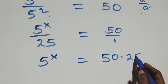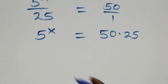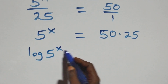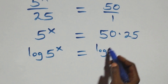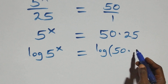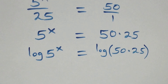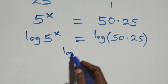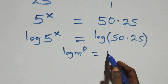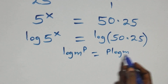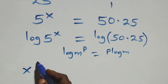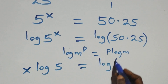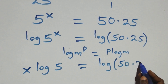We take the log on both sides. So we have log of 5 raised to power x equals log of 50 times 25. Applying the power rule of logarithms — when we have log m raised to power p, that equals p times log m — we get x log 5 equals log of 50 times 25.